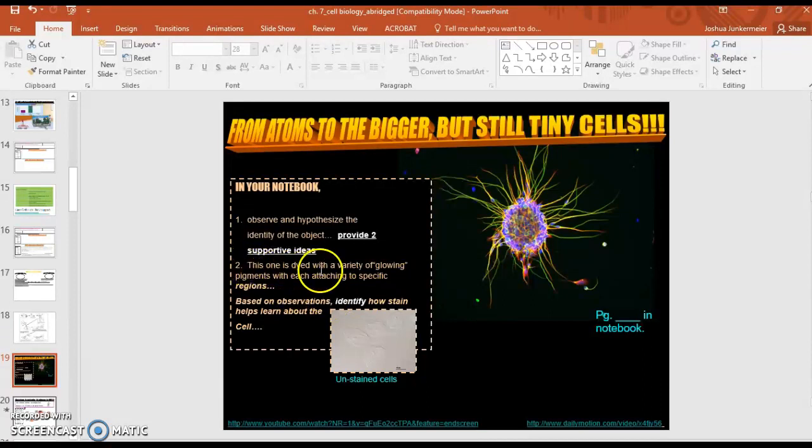Number two says, this one is dyed with a variety of glowing pigments. That's this right here. With each attaching to specific regions. So the different colors are different pigments that intentionally stain different parts of this. It says, based on your observations, just what you've looked at, identify how a stain can help you learn about a cell. So if each pigment stains a particular part of a cell, why do scientists use it? Why do you think they do it? So you're just going to conjure up a reason why you think they might stain or use pigments on cells, especially different pigments for different areas. Why do you think?